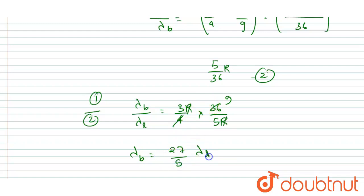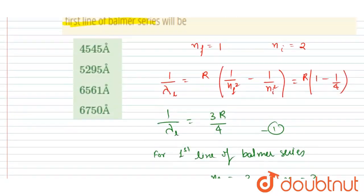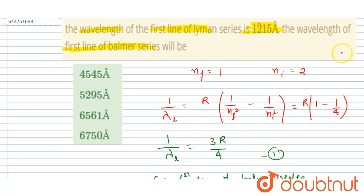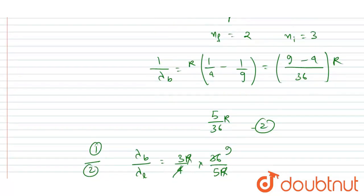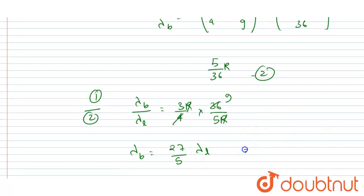Now you can see the λ_L value is already given in the question. It is 1215, so you will multiply 1215 here. I will write 27 times 1215 divided by 5.